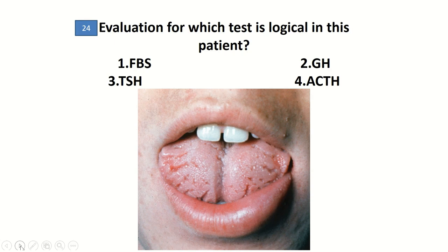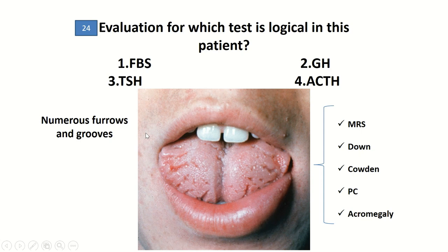Question 24: Evaluation for which test is logical in this patient? There are numerous furrows and grooves indicative of fissured tongue. Fissured tongue can be found in association with geographic tongue and also in conditions such as Melkersson-Rosenthal syndrome, Down syndrome, Cowden syndrome, pachyonychia congenita, and acromegaly. Considering acromegaly, the correct answer is evaluation for growth hormone.